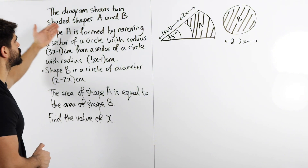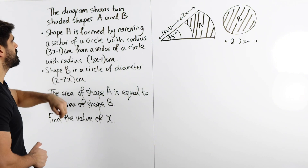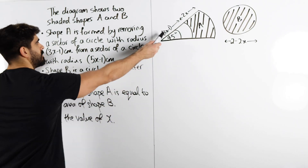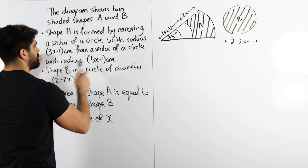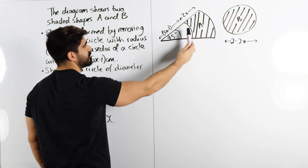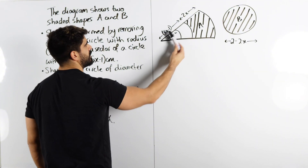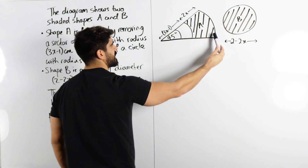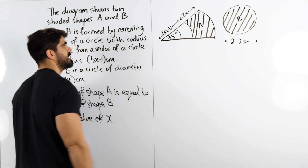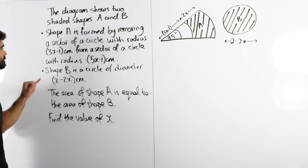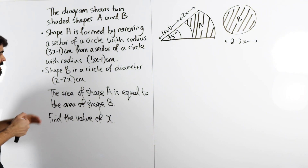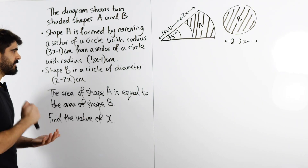So it says the diagram shows two shaded shapes A and B. Shape A is formed by removing a sector of a circle with radius 3x minus 1 from a sector of a circle of radius 5x minus 1. This shaded shape A is found by taking this smaller sector where the radius is 3x minus 1 from this larger sector which has radius 5x minus 1, because 3x minus 1 plus 2x is 5x minus 1. Shape B is just a circle with diameter 2 minus 2x. The area of shape A equals the area of shape B — find the value of x.